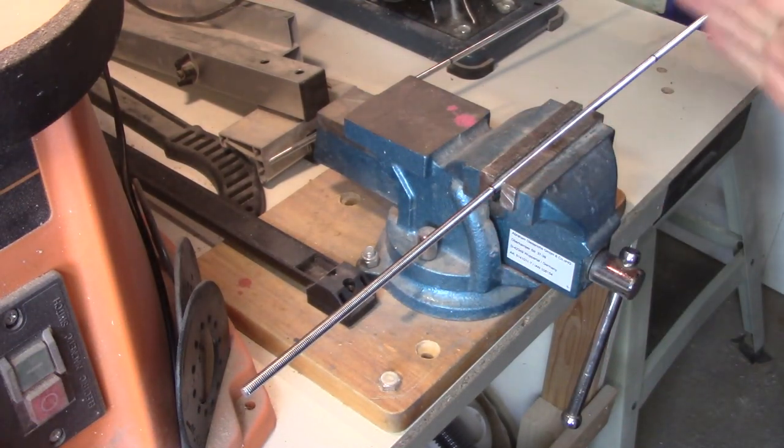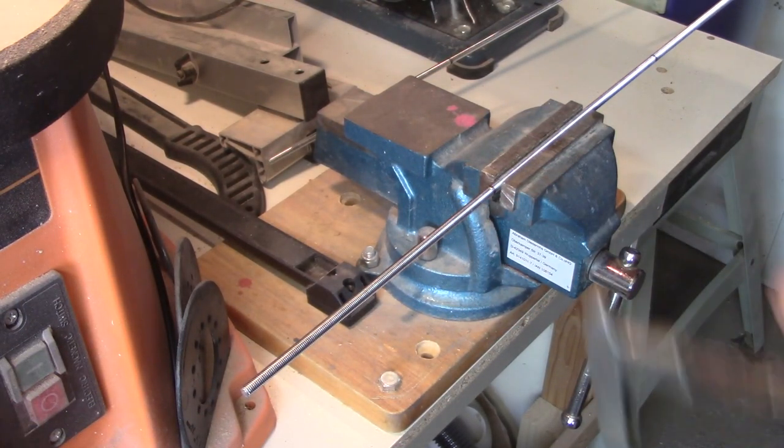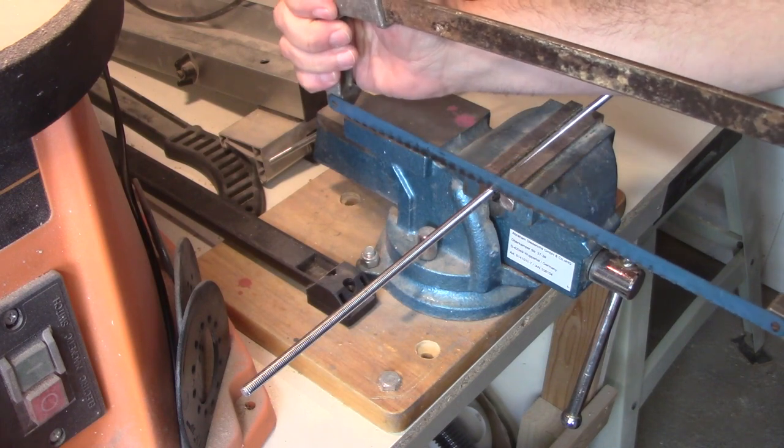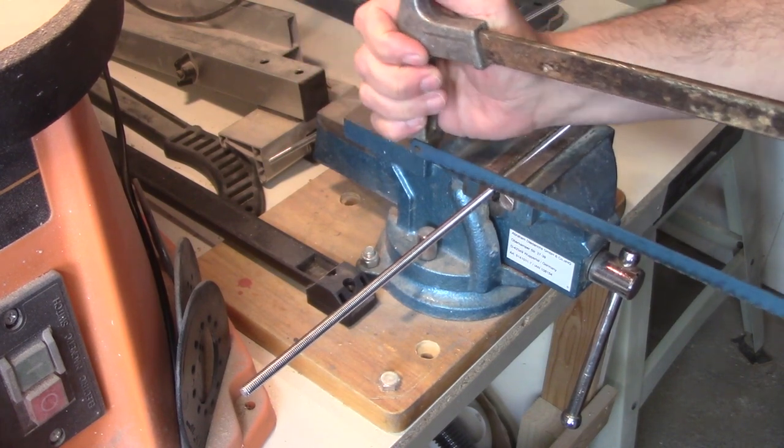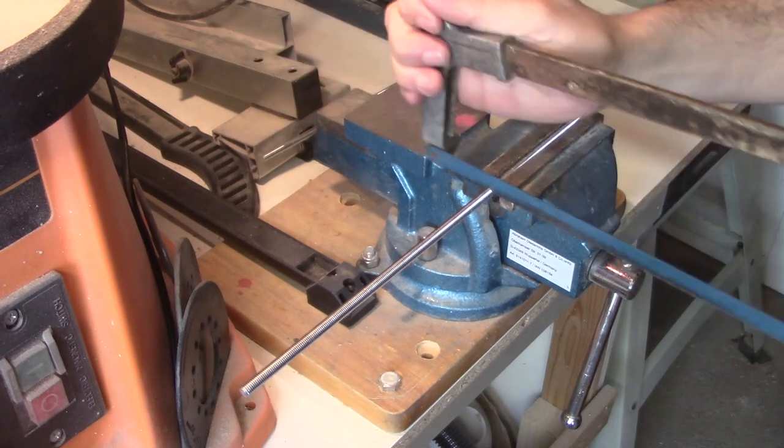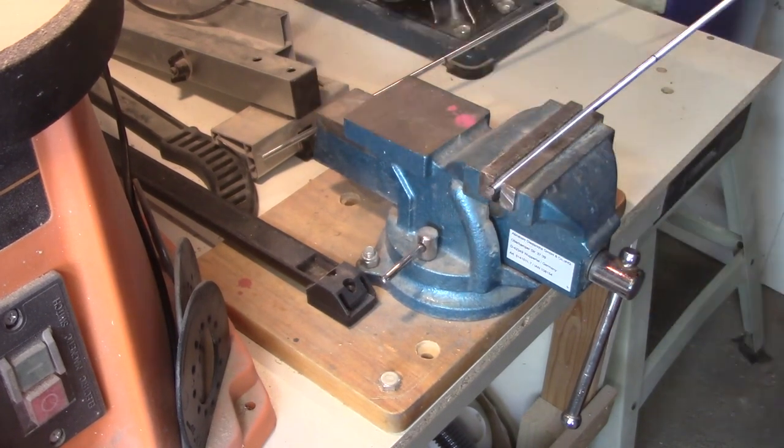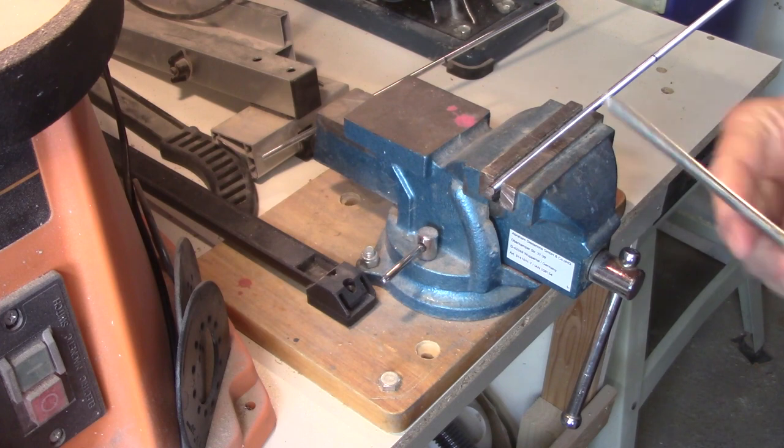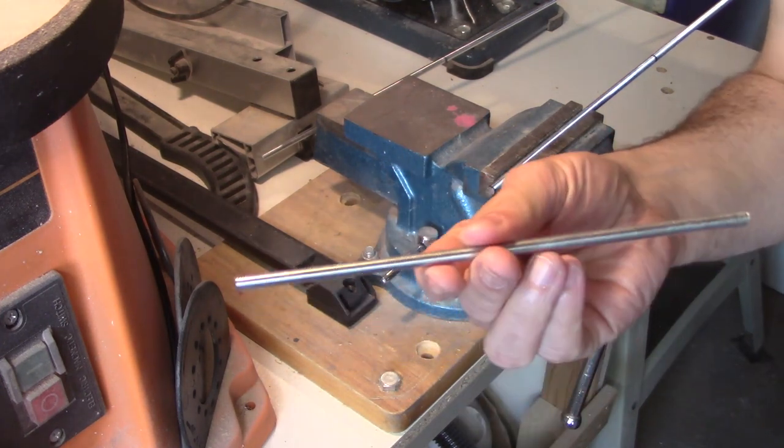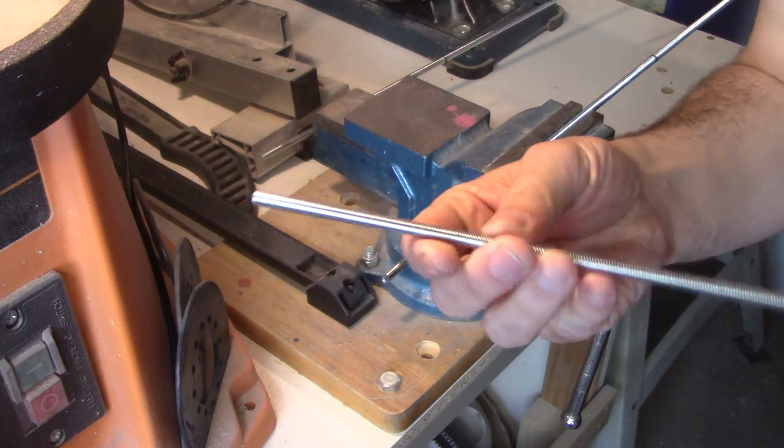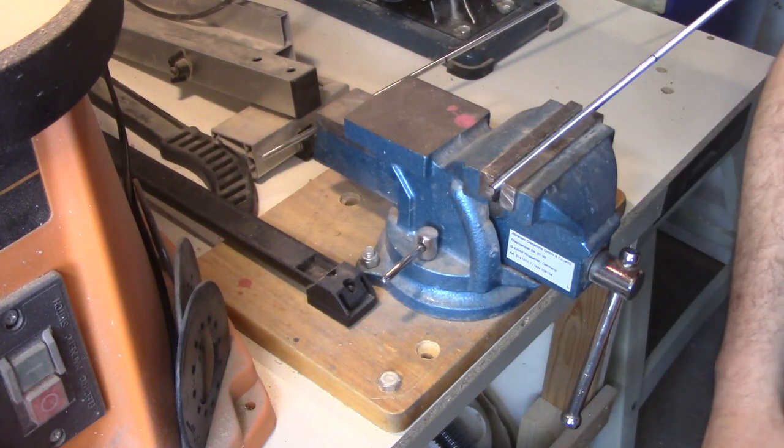We've got our piece marked out 200 millimeters along and we'll start to cut them out now by hand. So that's our first piece 200 millimeters and we'll just keep going and cut out all the others.